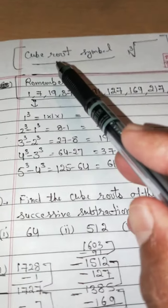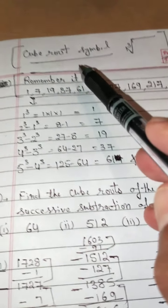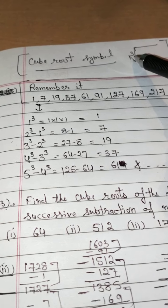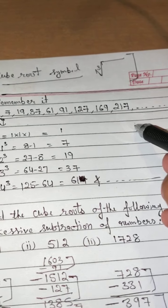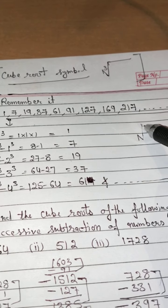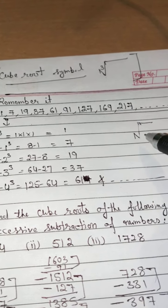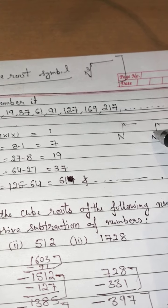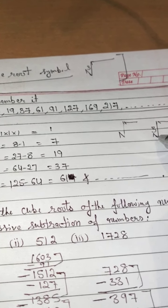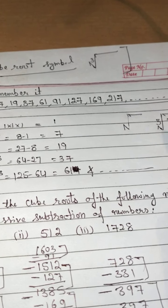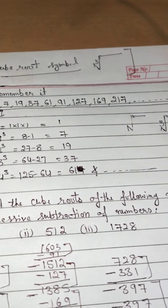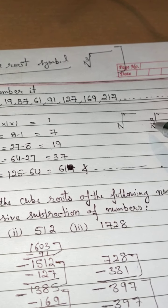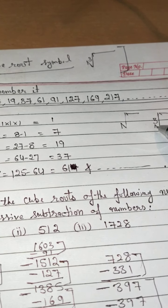Next part is your cube root. What is the symbol for cube root? This is your root symbol and here you write 3. The symbol for square root is the root symbol alone. And for cube root, it is the root symbol with 3 written here. So this is known as cube root — the symbol for cube root is the radical sign with 3.